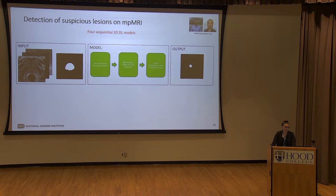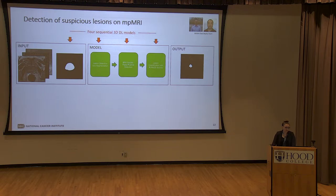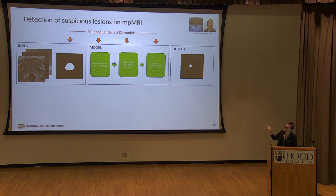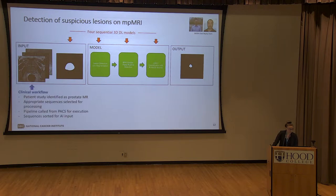What does this actually look like for a clinician? We take the multi-parametric MRI and the whole prostate volume and send it through four sequential 3D deep learning models: whole prostate segmentation, lesion detection, false positive filtering for benign hyperplasia, and PI-RADS score classification. The output is a mask of the lesion with a PI-RADS score associated with it.